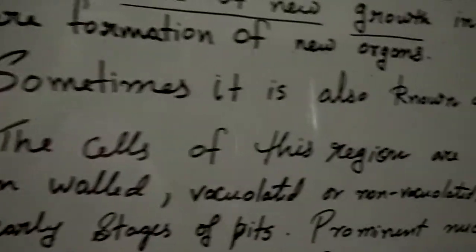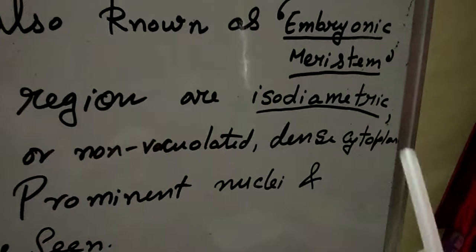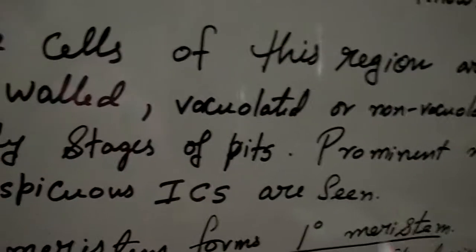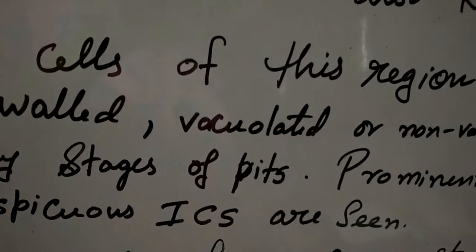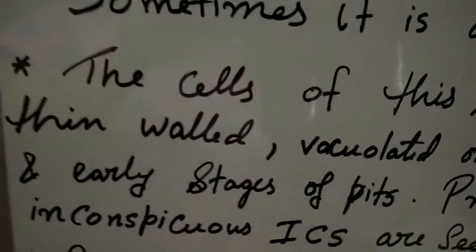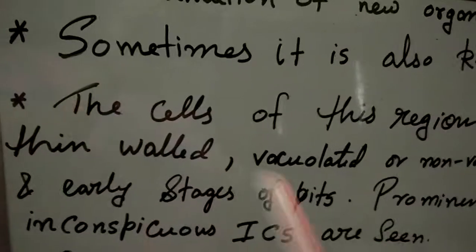The cells of this region are isodimetric, thin-walled, vacuolated or non-vacuolated, with dense cytoplasm, and early stages of pits are also present. Pits are small voids or spaces found in plant cells — why and when they are formed will be a future topic.